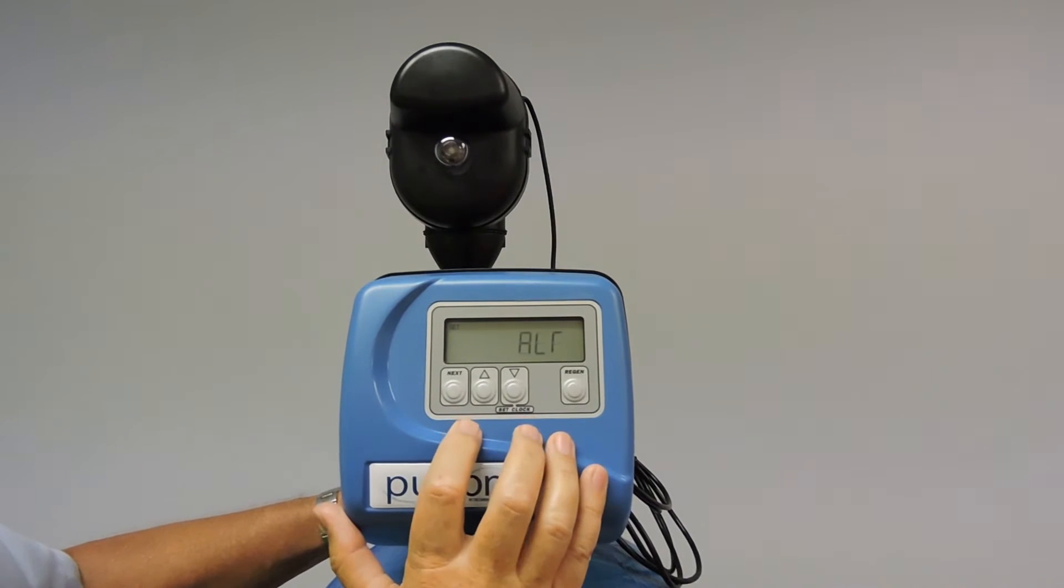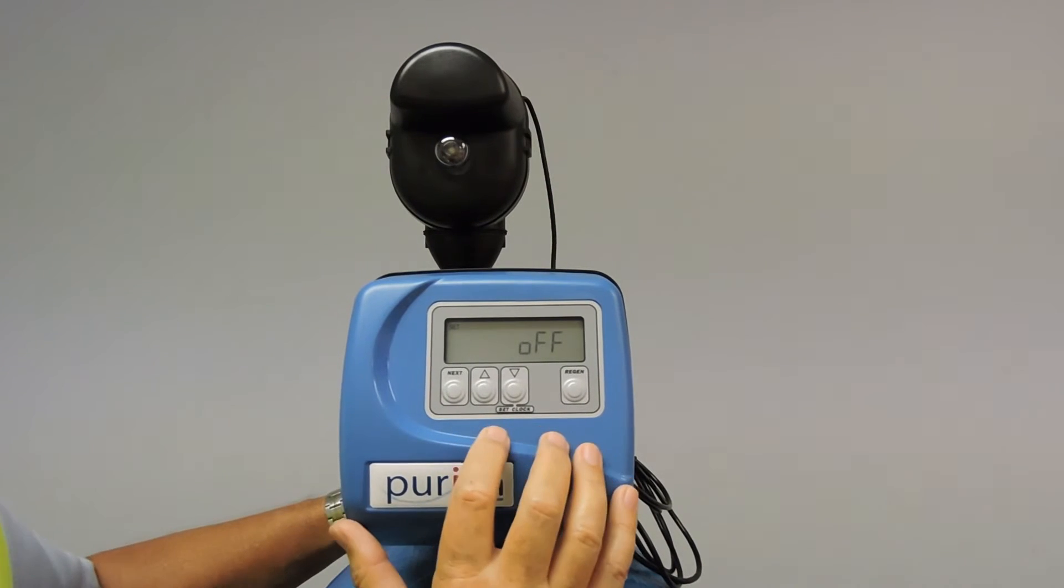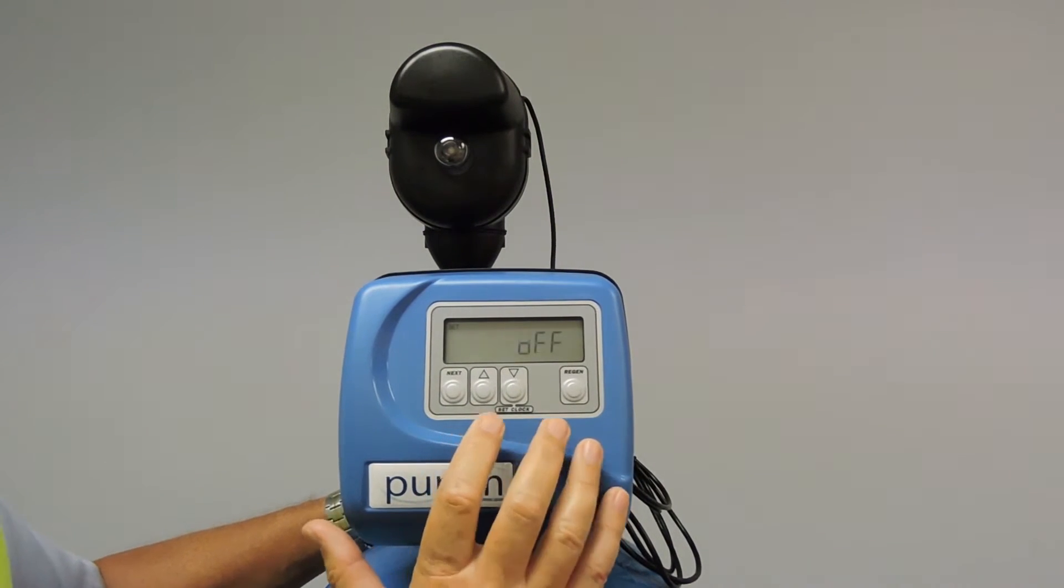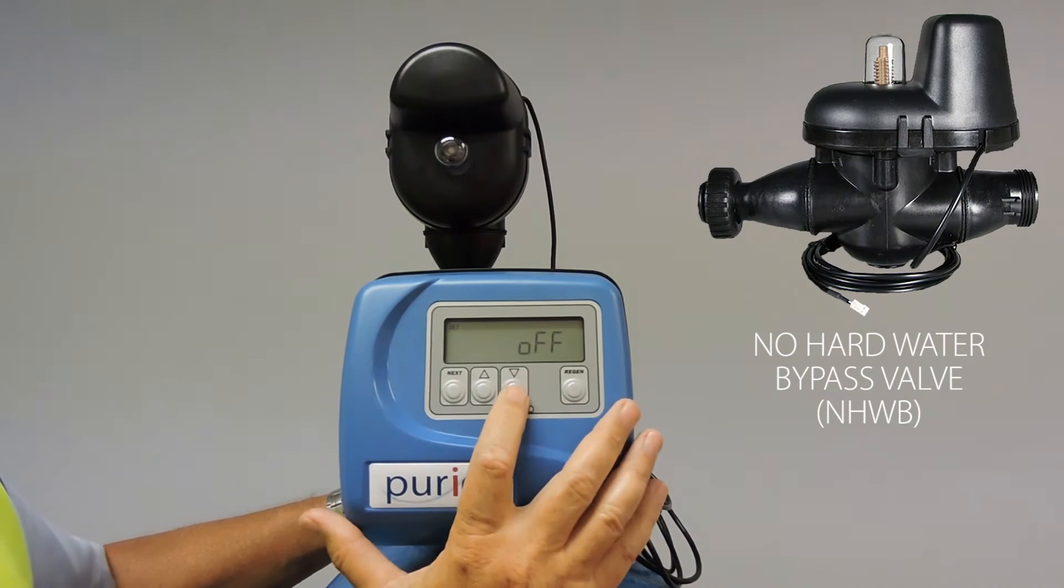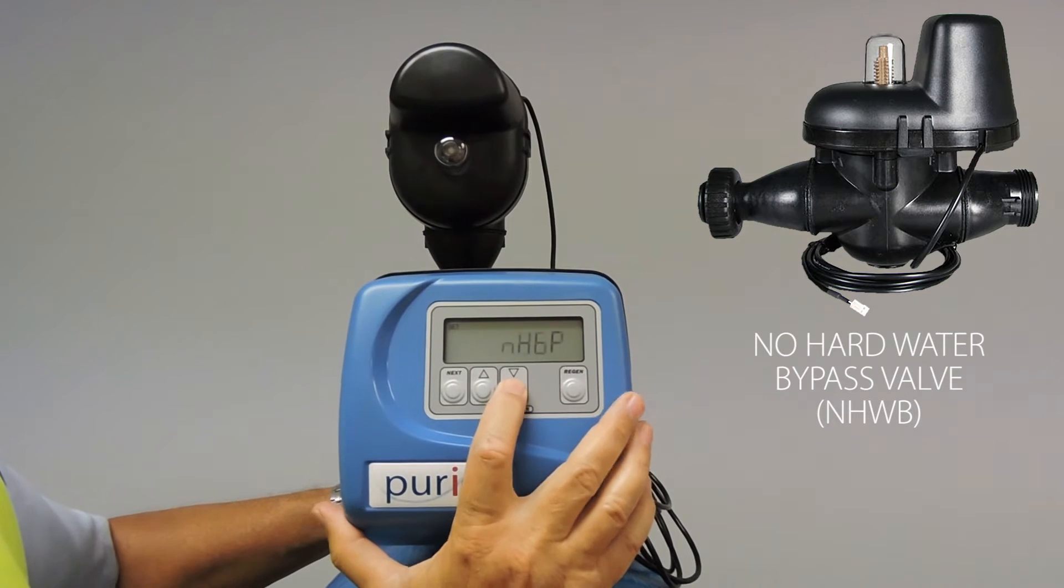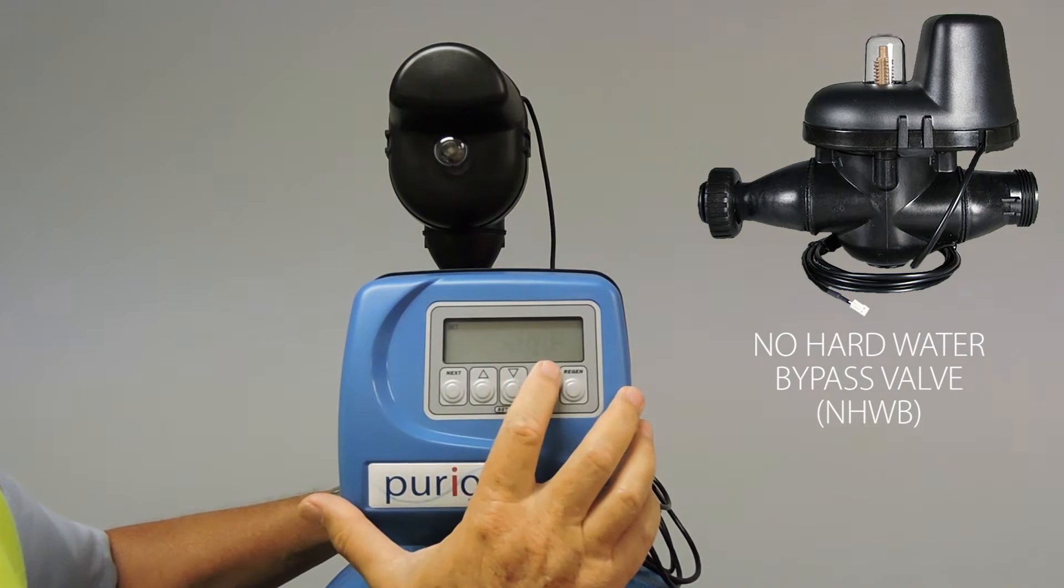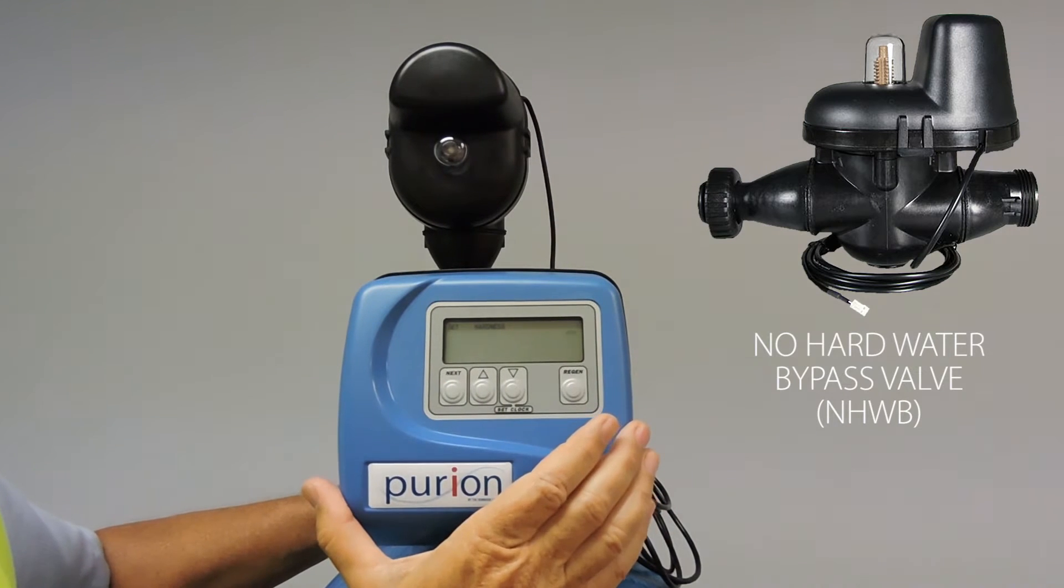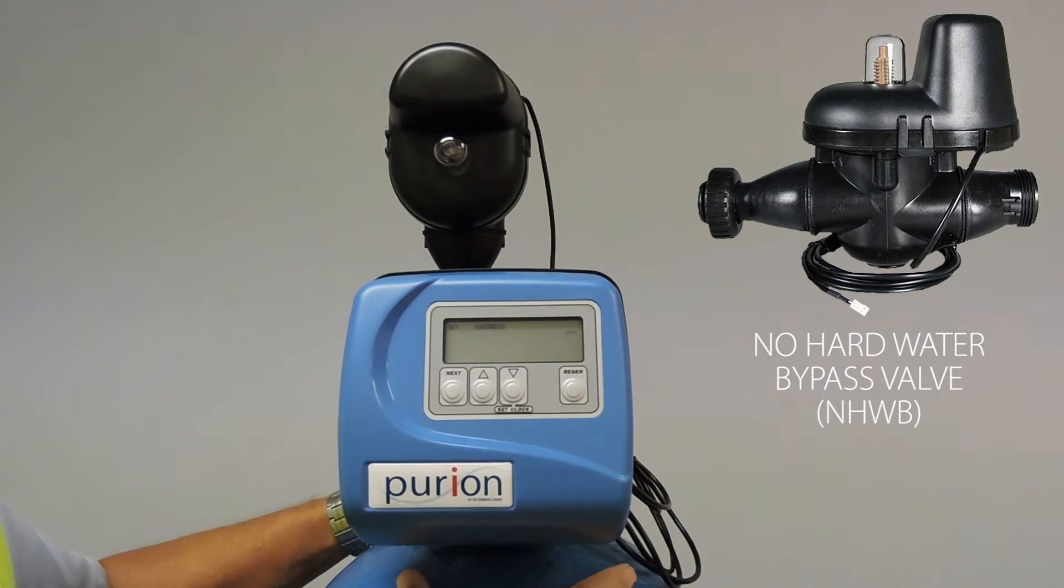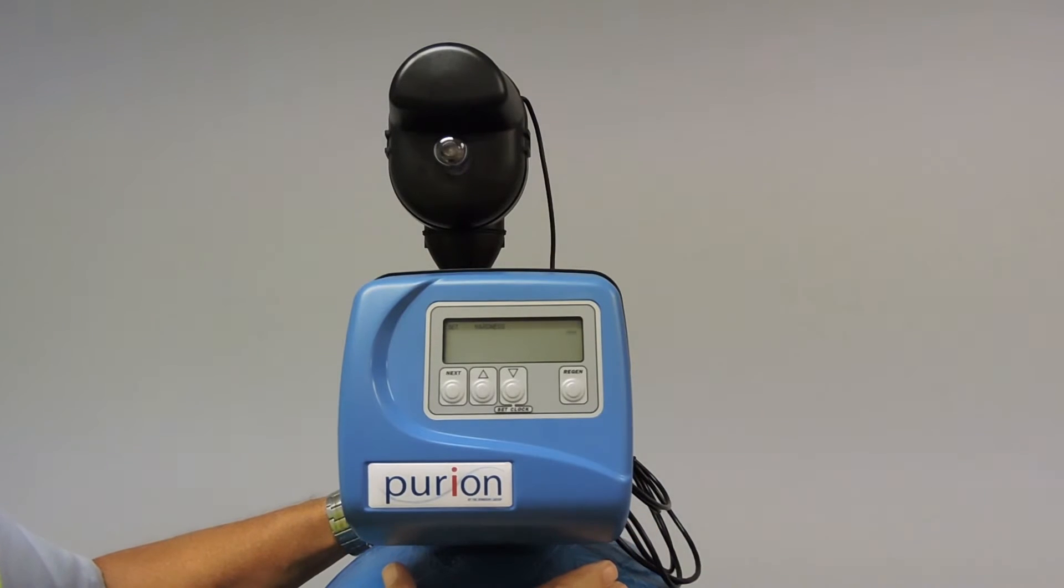Twin alternating. This is used for twin alternating valves. In our case we're using a single valve. But we are going to be setting it up with a no hard water bypass. So here I will scroll through to choose that option. No hard water bypass will come up. So then I press next, accept it. That then syncs the no hard water bypass in with the control valve.